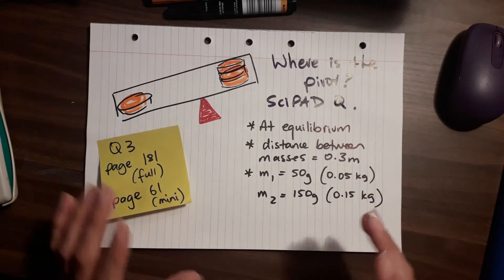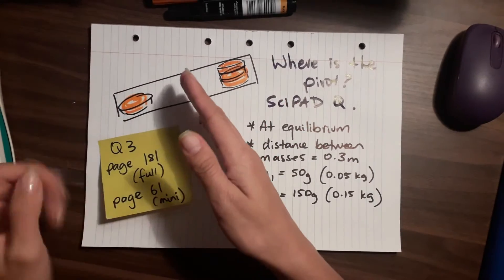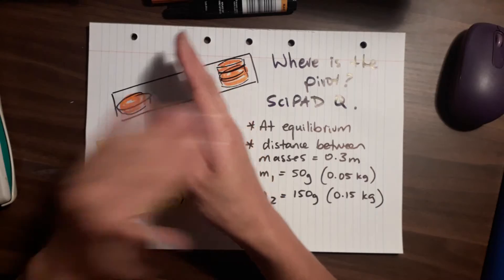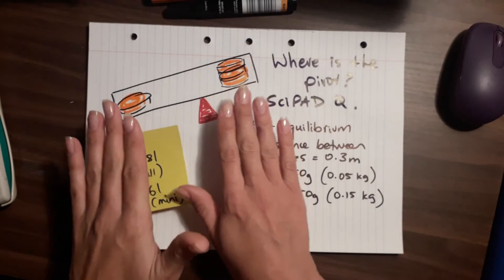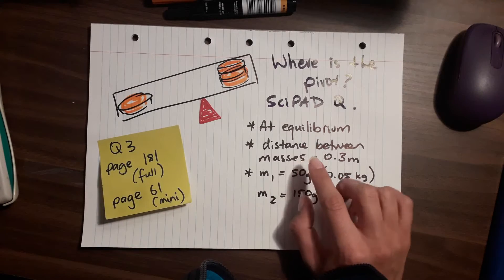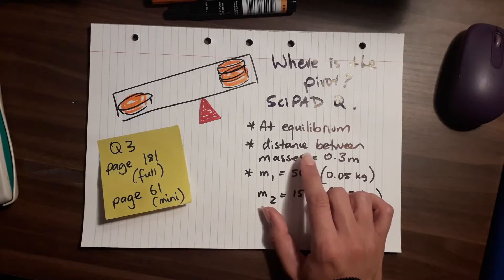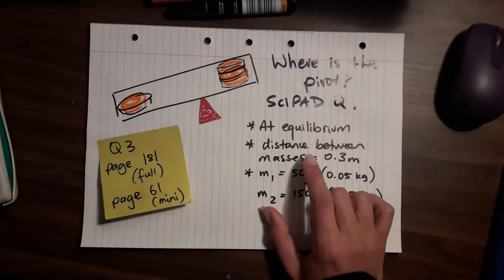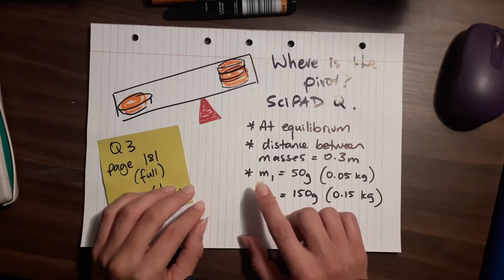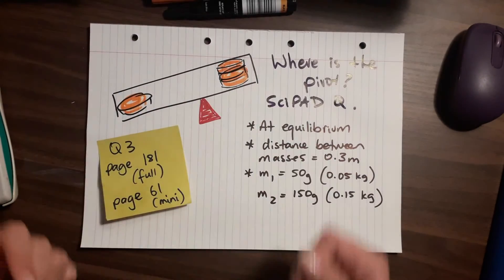Here's what the question is about: someone has their hand with a ruler on top, and they have some masses placed at the ends. The ruler is balanced, so we know that this system is at equilibrium. We've been told that the distance between the masses is 30 centimetres, so 0.3 metres. Each mass is 50 grams, with one on one side and three on the other.